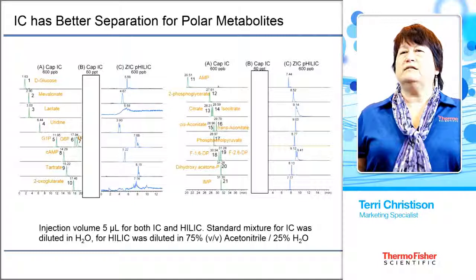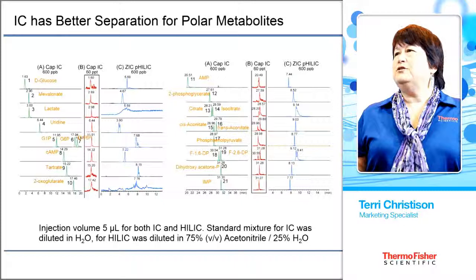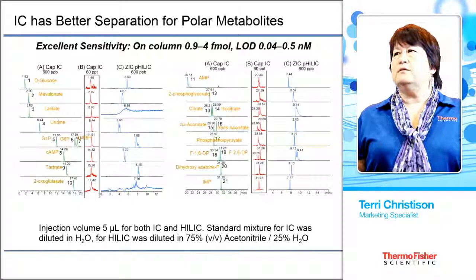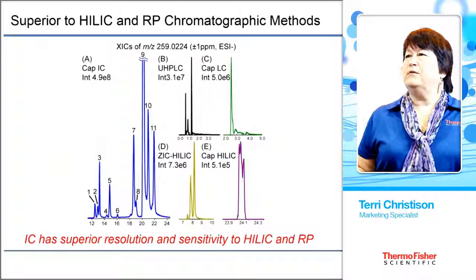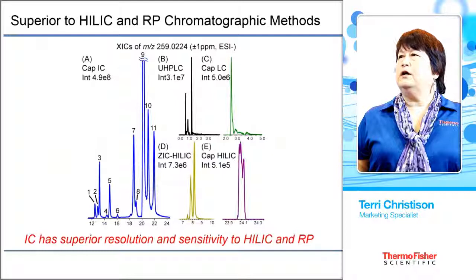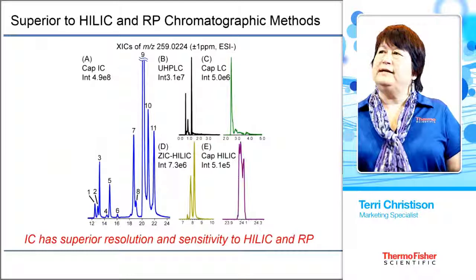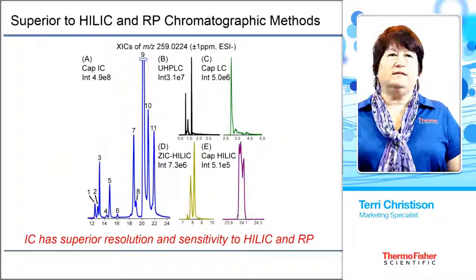IC also has extreme sensitivity. We're getting a 60 PPT concentration peak and the peaks still have great peak shape. The concentration — we're actually able to get less than one femtomole on column, with LODs less than one nanomolar. What I want you to take from this slide is that we have 11 isomers — monosugar phosphates — with cap IC here in the blue. Compared against reverse phase on top and HILIC on the bottom: reverse phase has two to three peaks separated, HILIC has three peaks separated, but with cap IC we have 11.